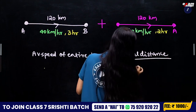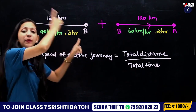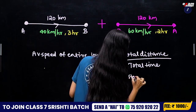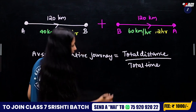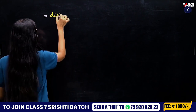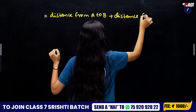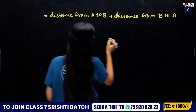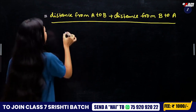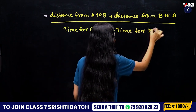Average speed equals total distance divided by total time. Total distance is the distance from A to B plus the distance from B to A. Total time is the time from A to B plus the time from B to A.